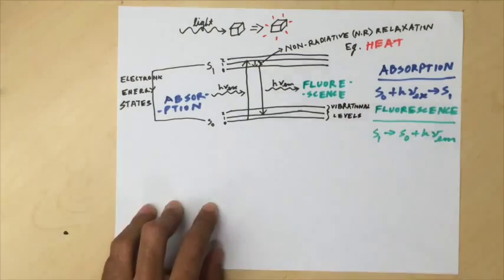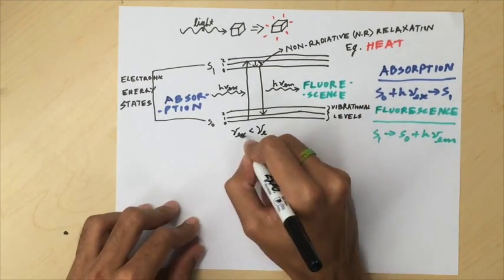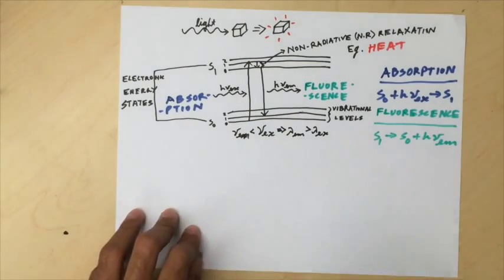For single photon absorption processes, the energy of incident radiation is more than that of emitted radiation. Thus, the wavelength of emitted radiation is always larger.